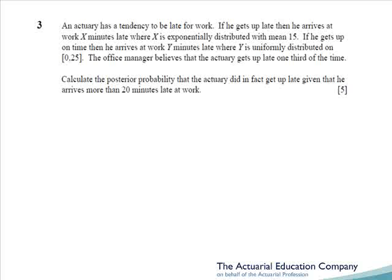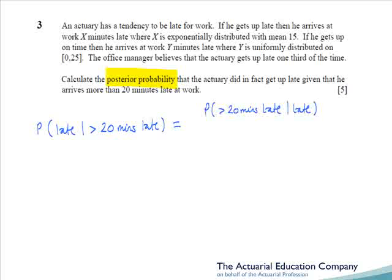Question 3 requires us to calculate the posterior probability that an actuary gets up late, given that they arrive more than 20 minutes late to work. Whilst it says posterior probability, you're going to have to work this out from first principles using Bayes' theorem, which is given on page 5 of the tables. So we require the probability they got up late given that they're more than 20 minutes late. Using Bayes' theorem, this equals the probability they're more than 20 minutes late given they got up late, times the probability they got up late, all divided by the probability they were more than 20 minutes late.